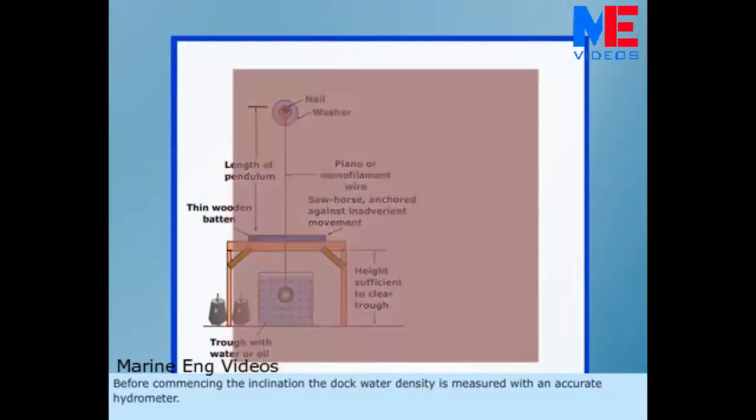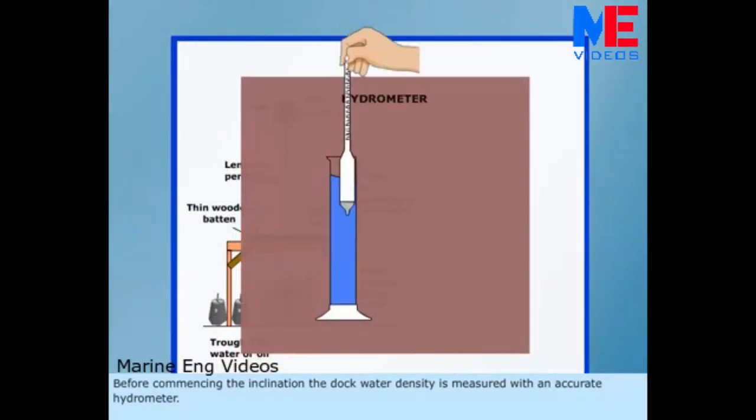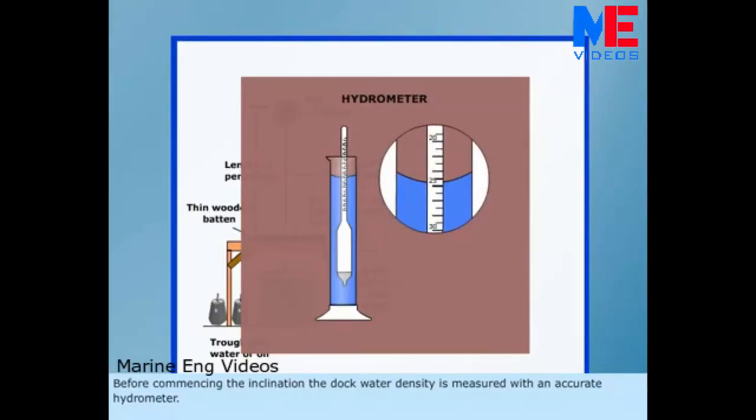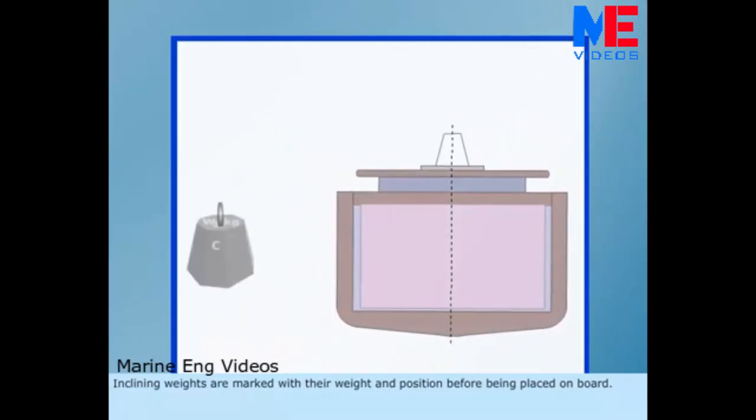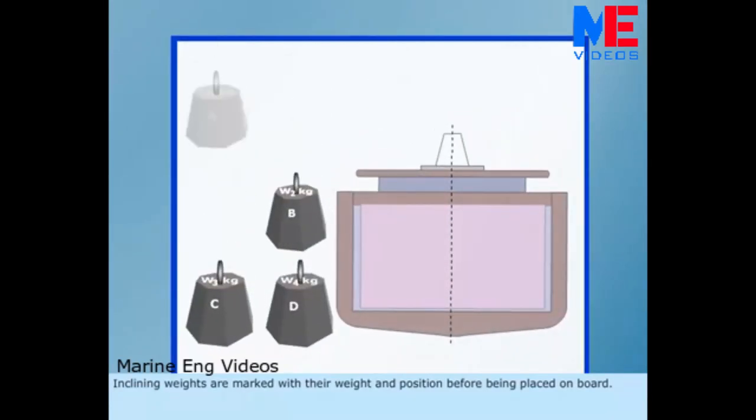Before commencing the inclination, the dock water density is measured with an accurate hydrometer. Inclining weights are marked with their weight and position before being placed on board.